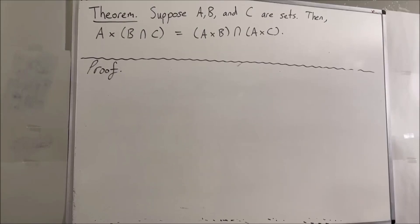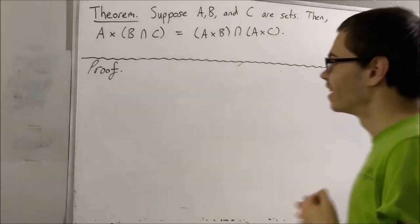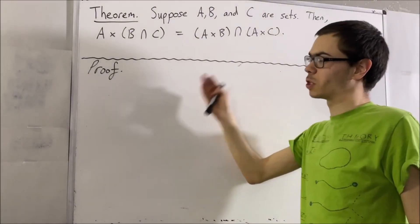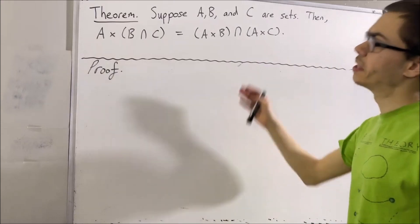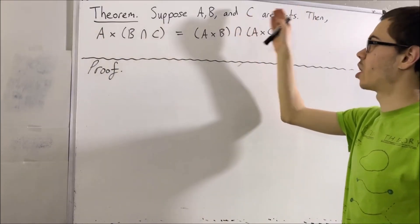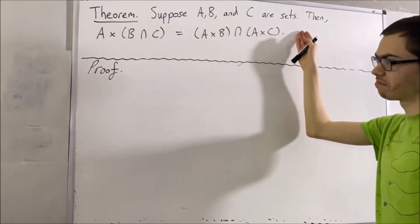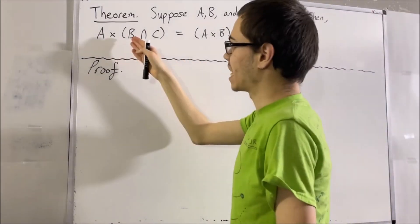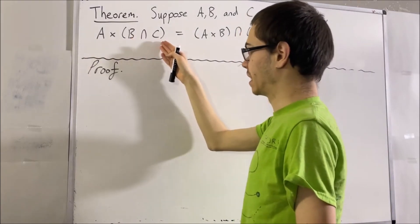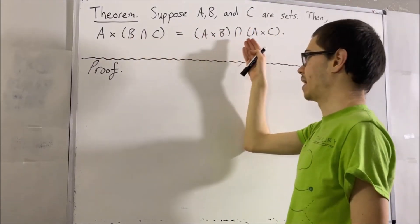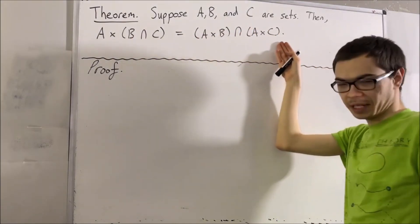Hello! In this video, we are going to prove the following theorem. Suppose A, B, and C are sets. Then, A times B and C is equal to A times B and A times C.